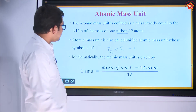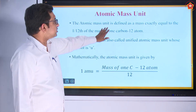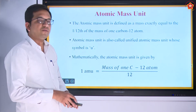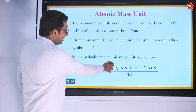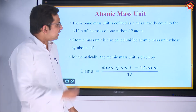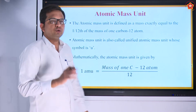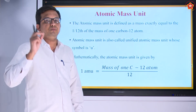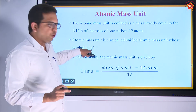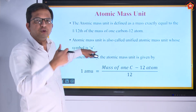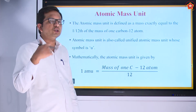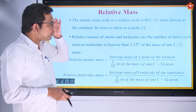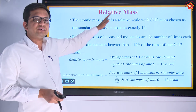As a standard definition, atomic mass unit is the mass of 1/12th of a carbon atom. There are various ways to denote this: one is atomic mass unit abbreviated as AMU; the IUPAC symbol is small 'u', also called unified mass.